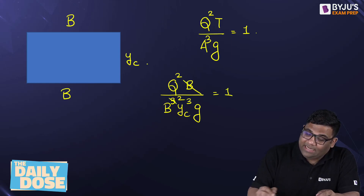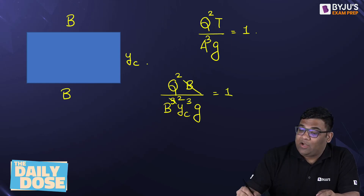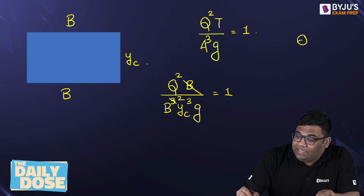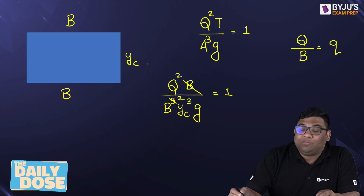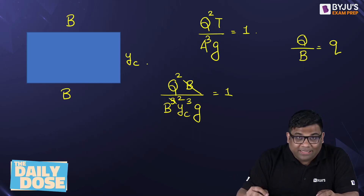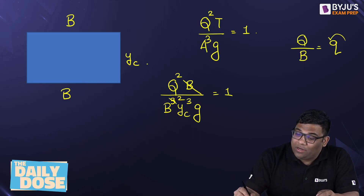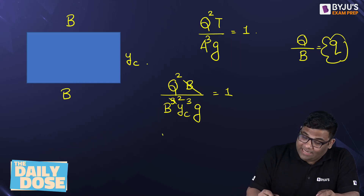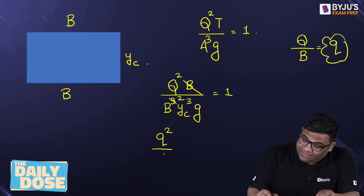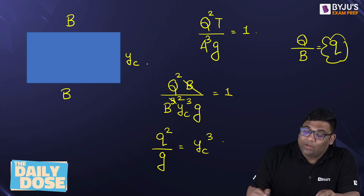This b and this get cancelled. Now we introduce a term q by b — that is the discharge per unit width, small q. And then I get the equation q squared by g is equal to yc cubed.